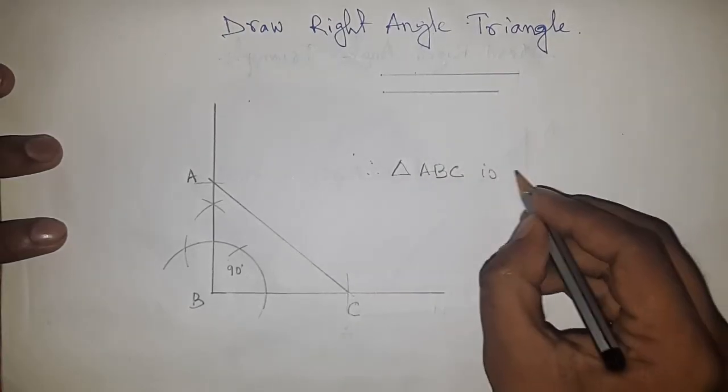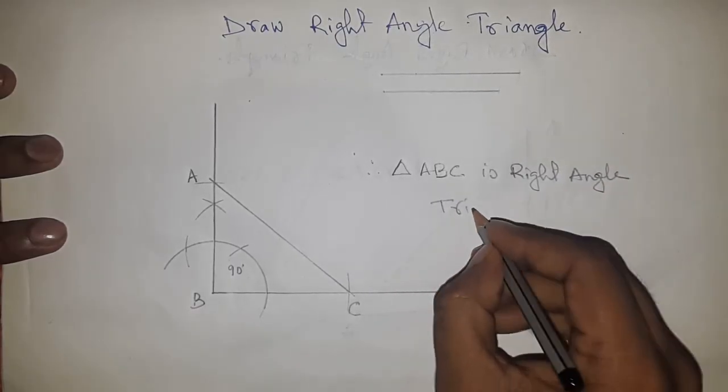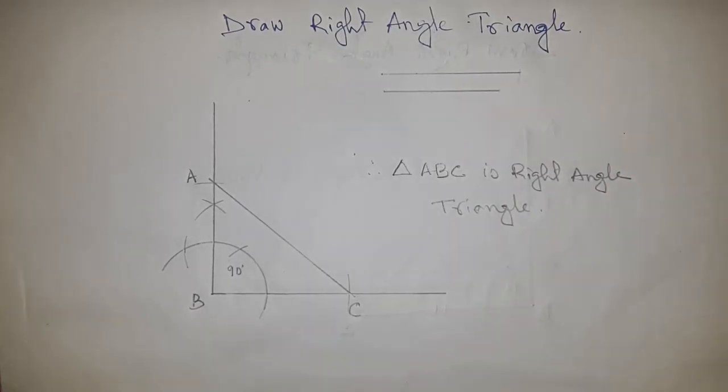So this is ABC is a right angle triangle. Thanks for watching, if this video is helpful then please subscribe, like and comment on my video.